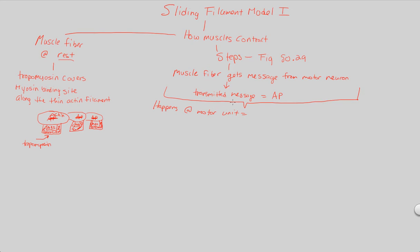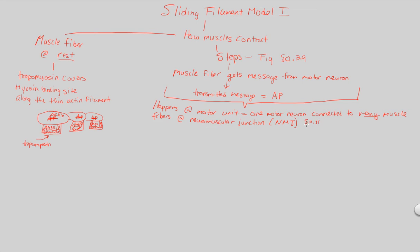A motor unit is defined as one motor neuron connected to many muscle fibers at what is known as the neuromuscular junction, commonly abbreviated as NMJ. This is shown in figure 50.31. So we have a motor unit — one motor neuron connected to many muscle fibers — and the connection between any neuron and muscle fiber is called the neuromuscular junction.